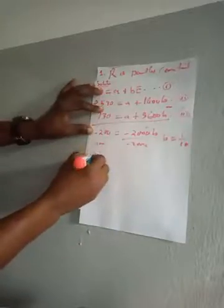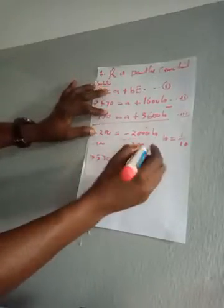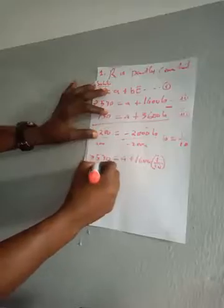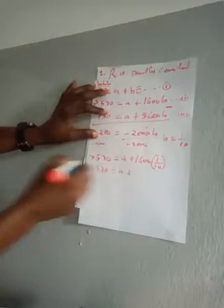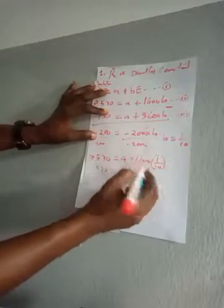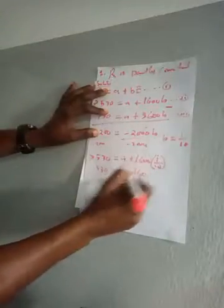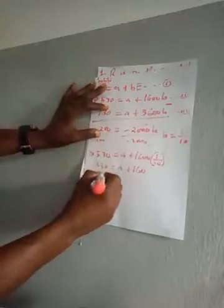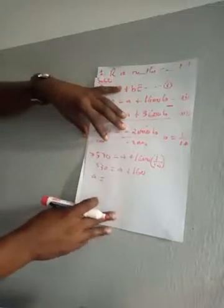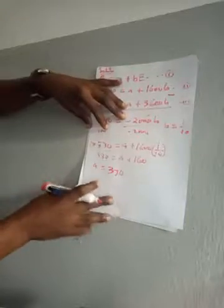Now we put b back into equation 2 to get the value of a. So 530 equals a plus 1600 times 1 over 10, which gives 530 equals a plus 160. Collecting like terms, a is equal to 530 minus 160, so a is equal to 370.